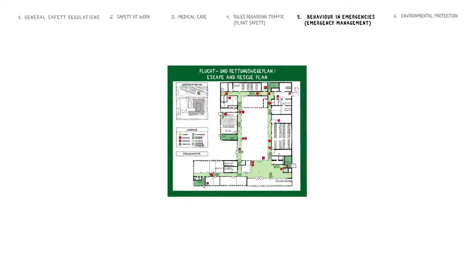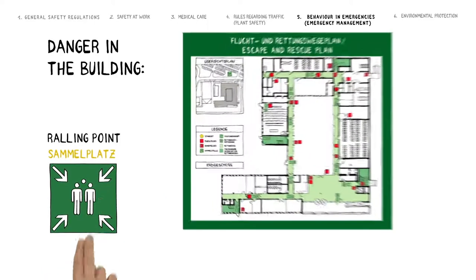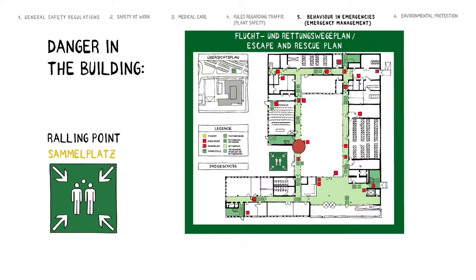The escape and emergency access route map is posted at a central location in each building. Please follow these instructions should an emergency occur. If there is the risk of danger within the building, please go to the next designated assembly point. Take the shortest possible route to get there.